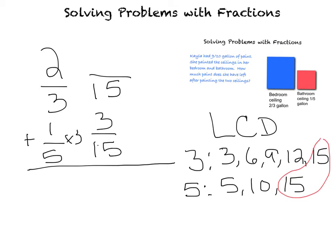I am going to do the same thing with two thirds: three times what equals 15? I know that three times five equals 15, so two times five is ten. I have my equivalent fractions. So now I am going to add ten fifteenths plus three fifteenths. Remember the golden rule when it comes to adding or subtracting fractions with the same denominator — what we call like denominators — the denominator does not change when they are the same. So I add my denominator to the bottom, which is 15. Now I add my numerators: ten plus three is thirteen. I have thirteen fifteenths.